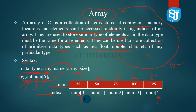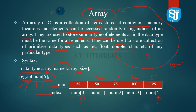The minimum index is 0 and the maximum index is n minus 1. So if the array size is 100, the minimum index is 0 and the maximum index is 99.